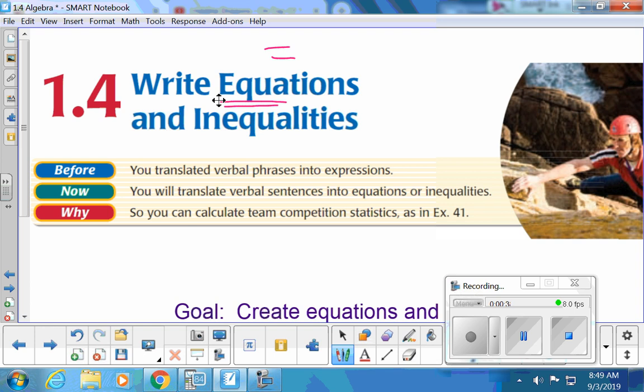And then do you know what symbol an inequality would have in it? No, not a variable. Good guess, though. Greater than or less than or greater than or equal to or less than or equal to would make something an inequality. It means they're unequal. They're not equal. One's bigger than the other. Okay, so that's the symbols we'll be utilizing today.